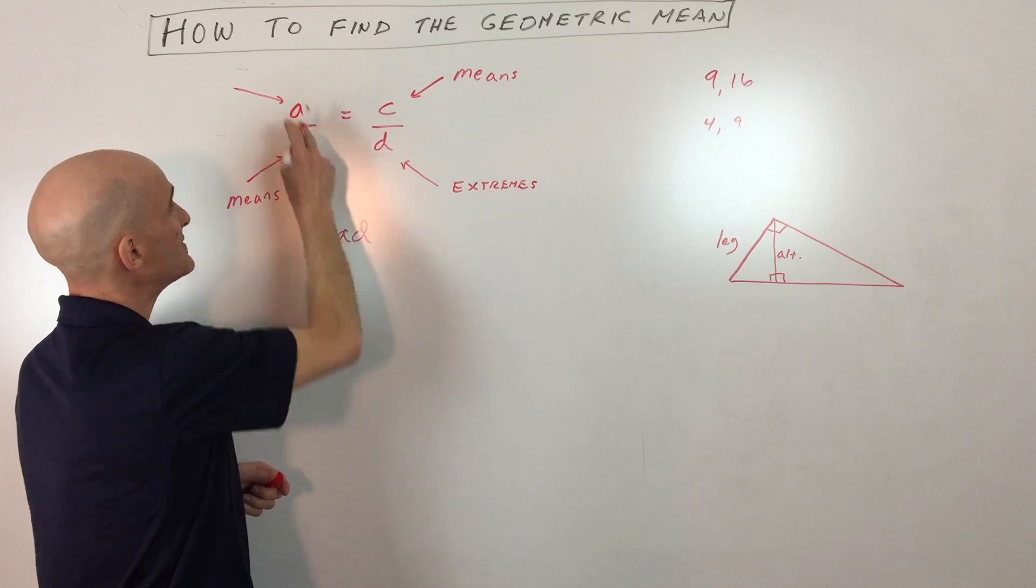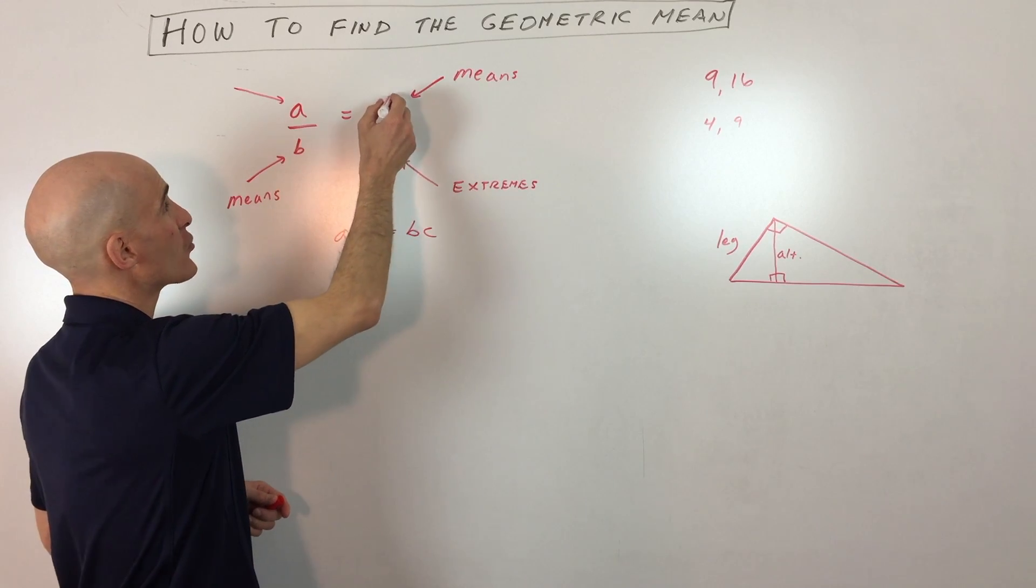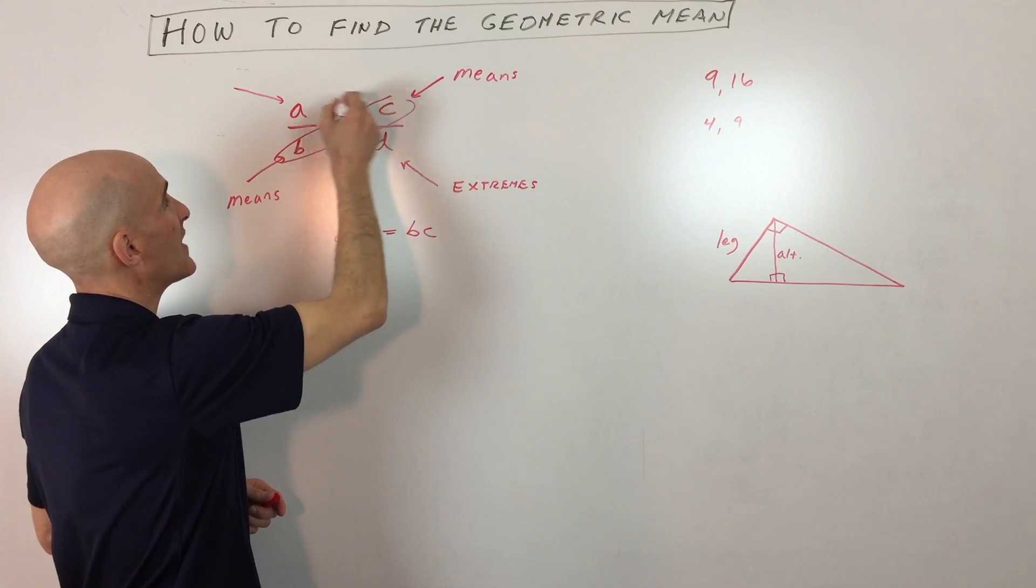For example, on this setup here, we would have a times d equals b times c. Okay, so basically that's the idea—you're cross-multiplying across that equal sign.